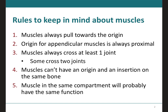Remember that muscles have an origin and an insertion, and the muscles will always pull towards the origin. The origin for the appendicular muscles is always going to be proximal, meaning that they will always be above. So for example, if we're talking about the upper limb, the origin will always be on top and the insertion will always be on the bottom.